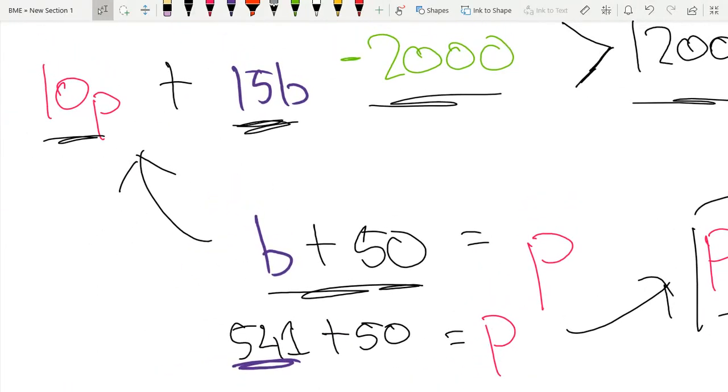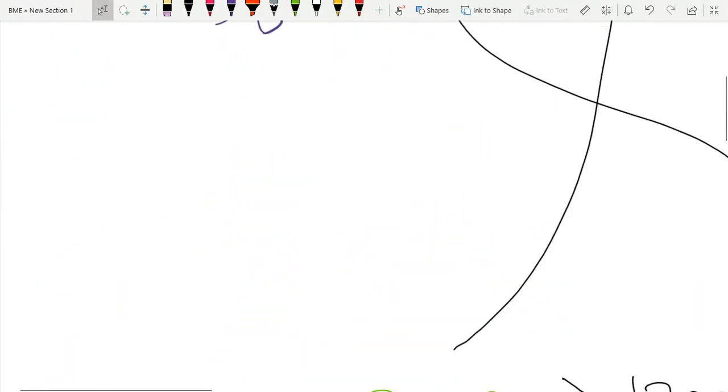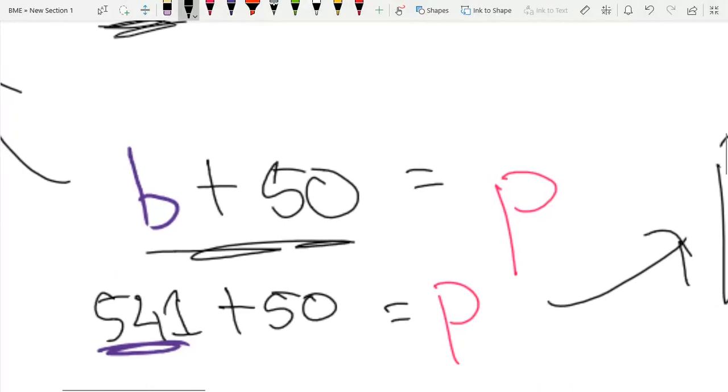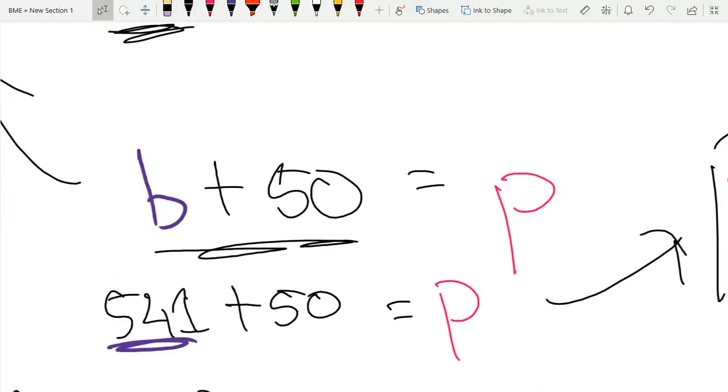B plus 50 equals P. We know this equation because we want to sell exactly 50 more pizzas than burgers. That's how we came to this equation. So the number of burgers plus 50 must equal the number of pizzas.